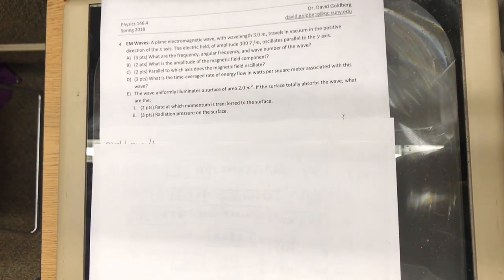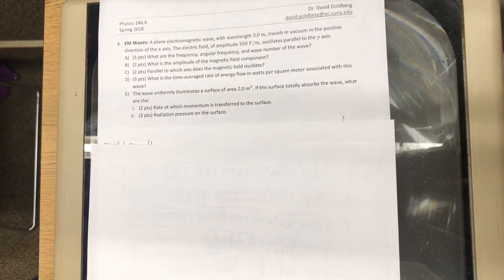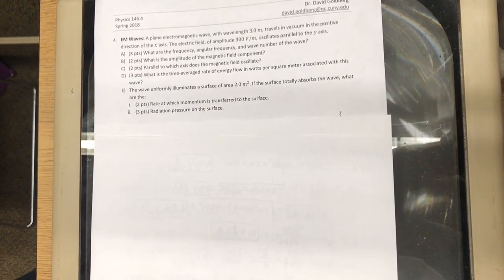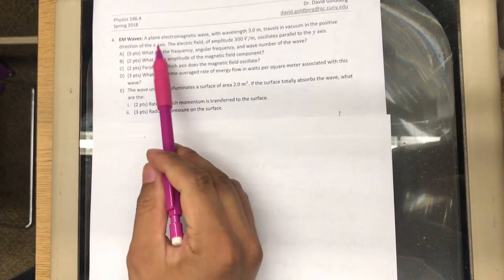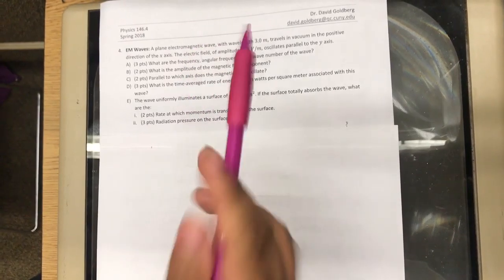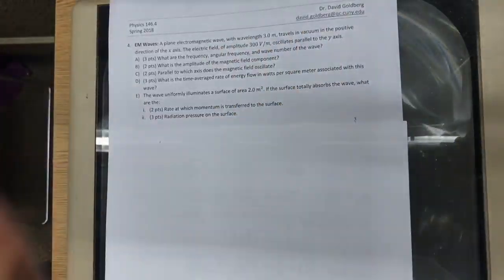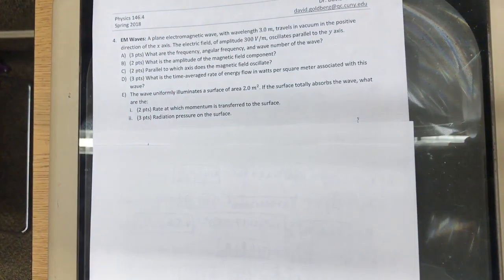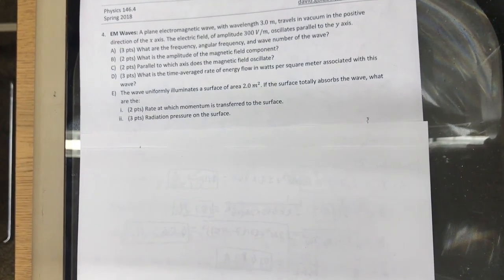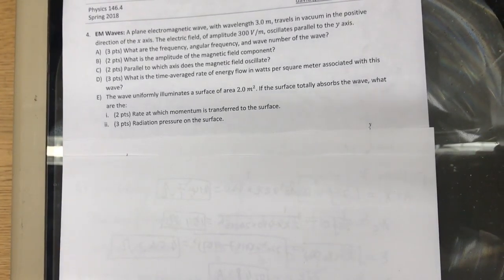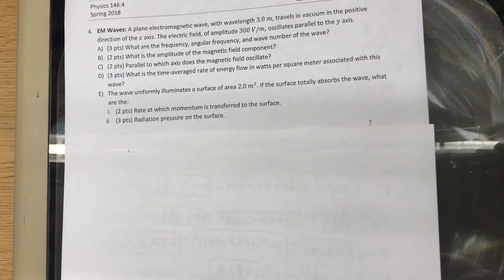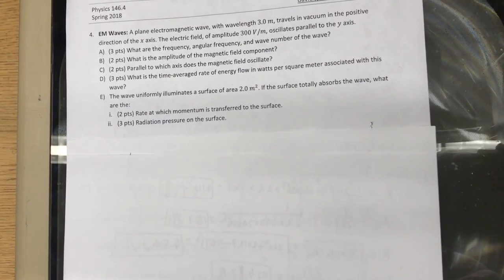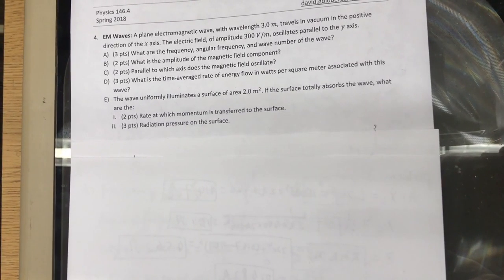Question 4 is a classic example of plug-and-chug. So just to read it, we have a plane electromagnetic wave, so it travels in a plane, simply, does not travel like this, just a simple plane, with wavelength 3 meters, travels in vacuum in the positive direction of the x-axis. The electric field of amplitude 300 volts per meter oscillates parallel to the y-axis.